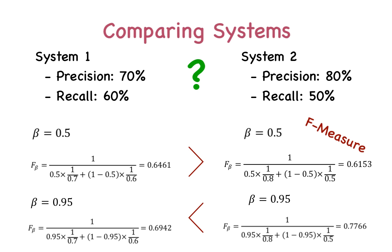And that's it! We've taken a look at precision, recall, and the F-beta measure. In future videos, we'll look at graphical methods of measuring performance like ROC curves and determining the area under the curve, as well as regression problems with programming examples. If you got something out of this, please share the video and don't forget to subscribe to the channel for more videos.